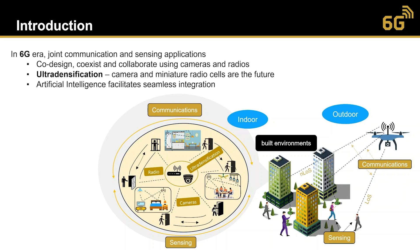The same applies to indoor environments as well. Wireless devices connect to access points, and cameras are everywhere used for surveillance. In the 6G era, we expect co-design, coexistence, and collaboration between cameras and radios due to their ubiquitous presence. The millimeter wave spectrum in 5G and beyond has shorter coverage due to smaller antenna sizes, resulting in miniature radio cells. The number of radio cells will increase — almost one per closed environment — resulting in ultra-densification of cameras and radios together. This builds a complex environment facilitatable only using artificial intelligence.